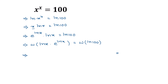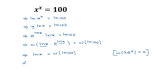Applying the Lambert W identity — W of a times e to the power a equals a — to the left side, we get ln of x is equal to W of ln of 100. Therefore the value of x is equal to e to the power W of ln of 100.